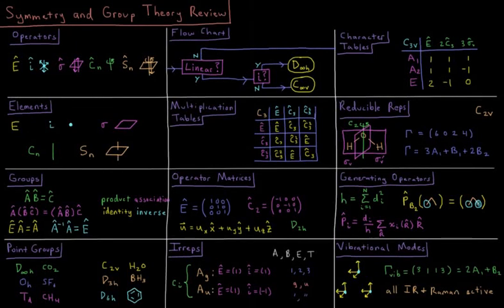This video is a review of the Symmetry and Group Theory chapter in the Quantum Chemistry and Spectroscopy playlist. We start by defining symmetry operators, things that when applied to a molecule with the correct symmetry elements will leave the molecule unchanged.